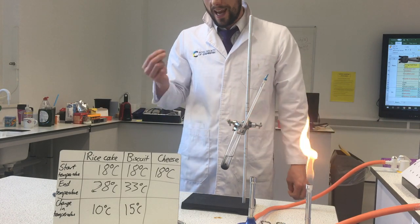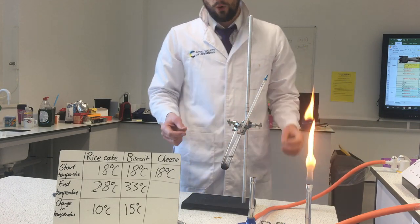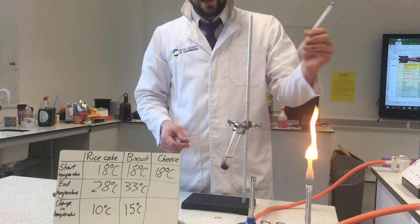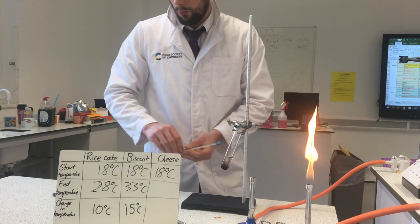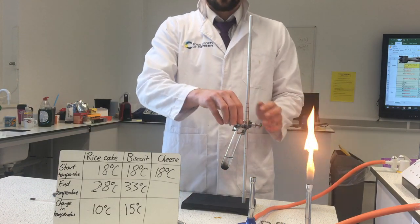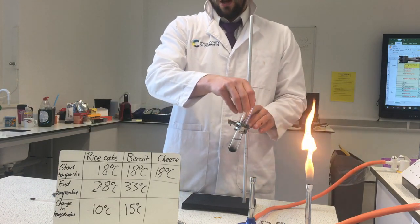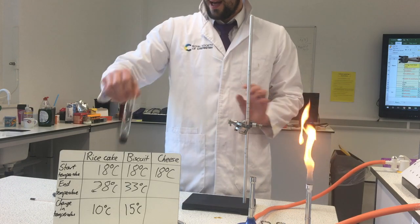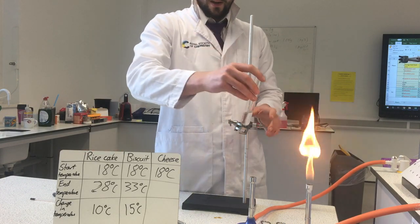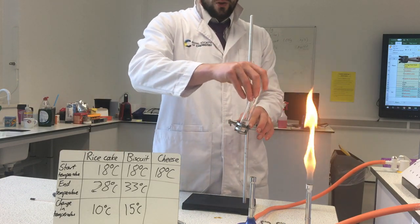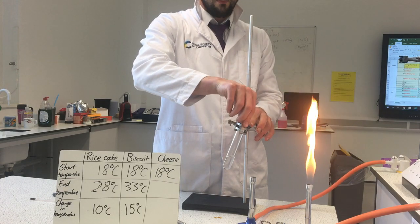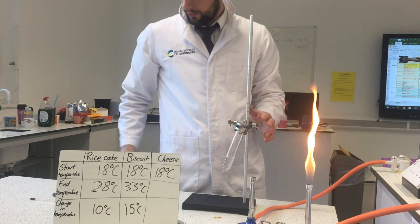I'm using the same mass of all of the foods. Even though the pieces are different sizes, I weighed them carefully — that's a control variable. I've got my last boiling tube of water: 20 millilitres at 18 degrees — more control variables.